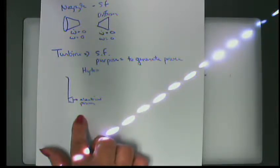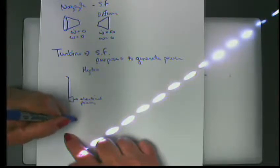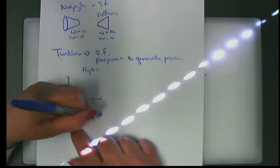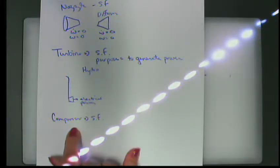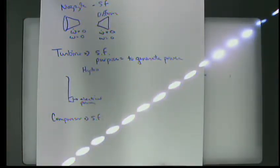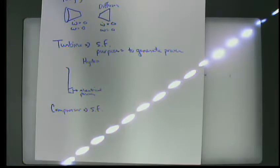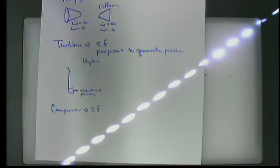The purpose of a turbine is to generate power. Another type of steady flow device is a compressor, whose purpose is to change the pressure of a fluid or change its state — for example, compressing a two-phase fluid into a liquid. Compressors are very important industrial appliances; if you have a refrigerator, freezer, or air conditioner, it requires a compressor for the phase changes involved.